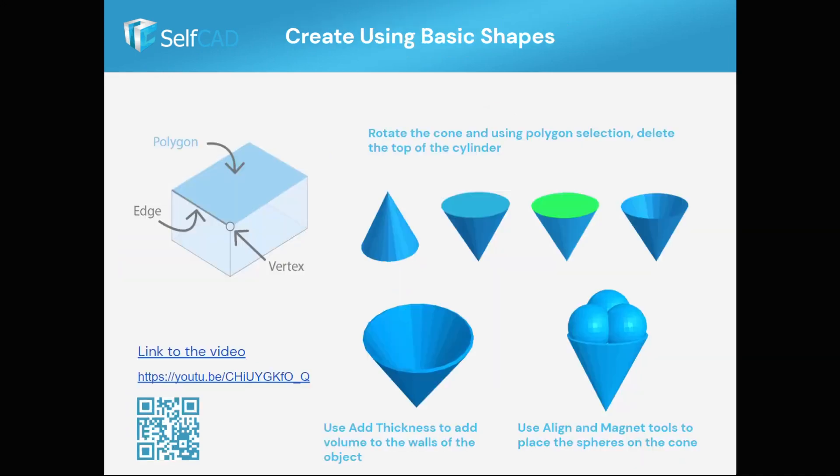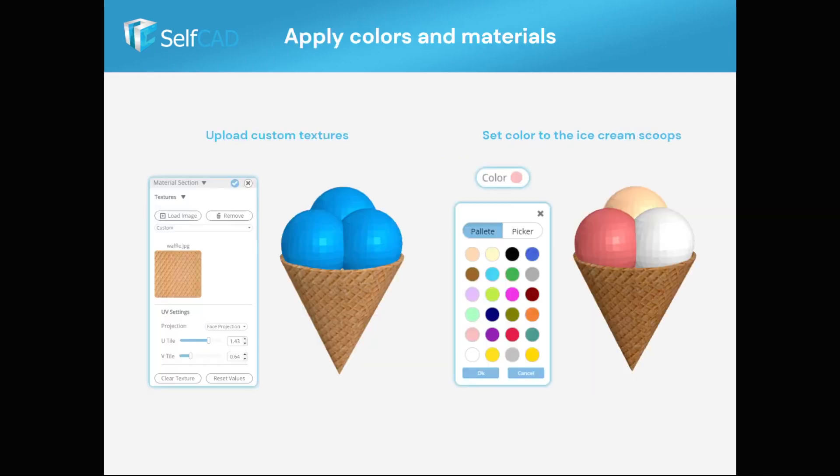SelfCAD has an intuitive way for selecting parts of an object and has the tools to hollow objects. In this example, you can see how to create an ice cream cone with wall thickness in just a few simple steps.